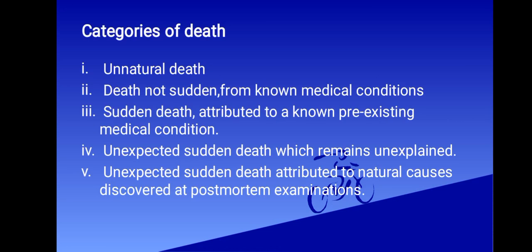We are now going to briefly look at the categories of death. In this case, we have five categories. The first is unnatural death — examples include homicide, suicide, etc. The second is death that is not sudden, from non-medical conditions.